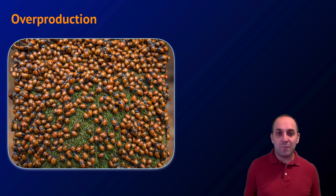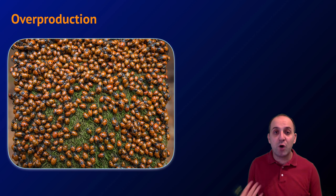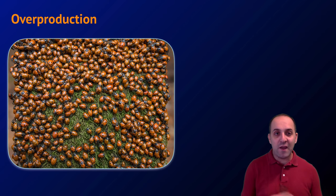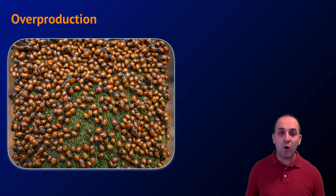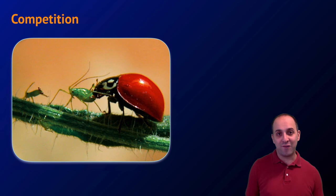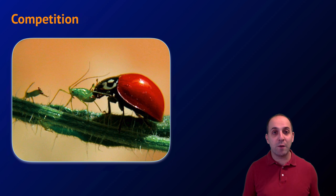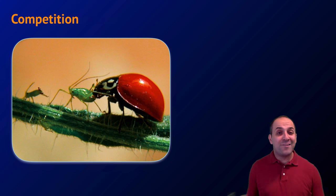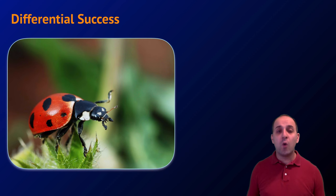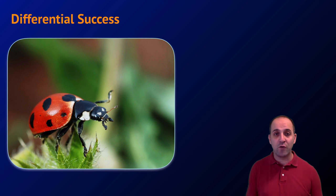The next observation for natural selection is the notion of overproduction of offspring, which comes from Thomas Malthus. Every generation produces more offspring than the environment could possibly support. Not all of these ladybugs are going to survive — in fact, very few of them are — and that's true for all species on the planet. As a result, organisms need to compete for resources. Some members of any generation are going to be luckier and better adapted for their environment, and so they're going to survive and out-compete those who aren't. This leads to differential success among individuals in a particular generation.